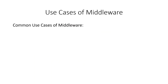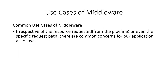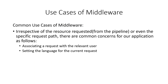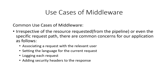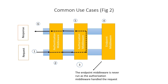Next, let's look at common use cases of middleware. Irrespective of the resource requested, there are common concerns — sometimes called cross-cutting concerns — that apply to our application. These include: associating a request with the relevant user, setting the language for the current request, and adding security headers to the response. Many applications require these types of functionalities, as shown in figure two.